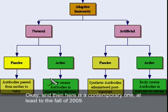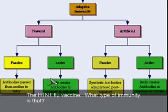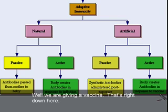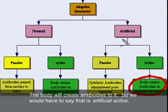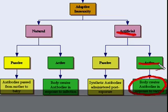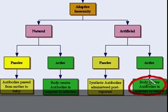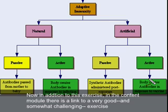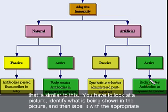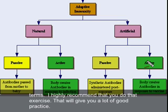And a contemporary one — the H1N1 flu vaccine: what type of immunity is that? Since we're giving a vaccine, the body will create antibodies to it, so that is artificial active immunity. In addition to this exercise, in the content module there's a link to a good and somewhat challenging exercise where you look at a picture, identify what's being shown, and label it with the appropriate terms. I highly recommend you do that exercise — it will give you a lot of good practice.